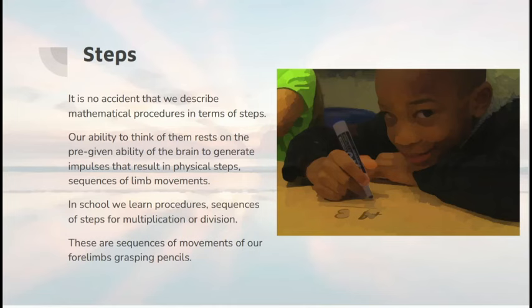Now we talk about steps, steps when we are walking and steps when we do mathematical procedures. And our ability to think of them rests on the pre-given ability of the brain to generate impulses that result in physical steps, sequences of limb movements. And that's true whether we're walking or writing down sums as a child.